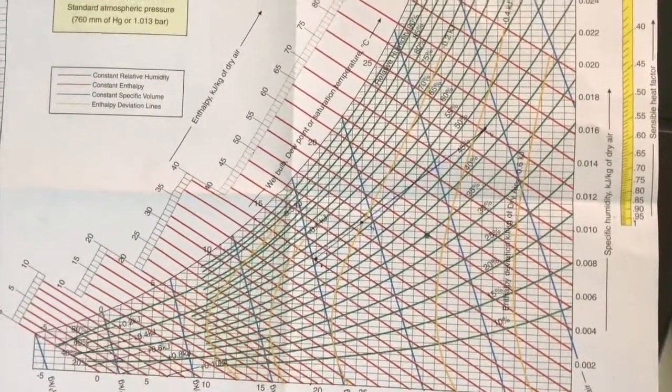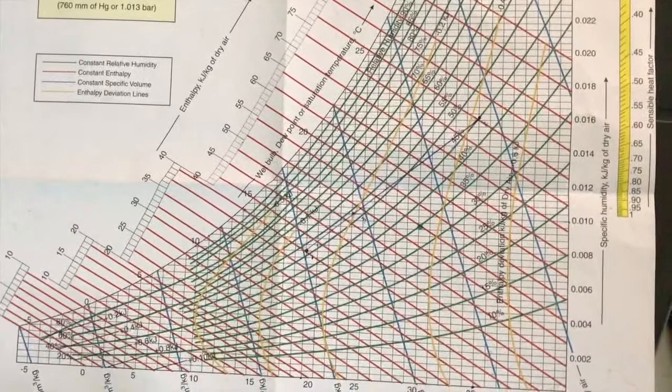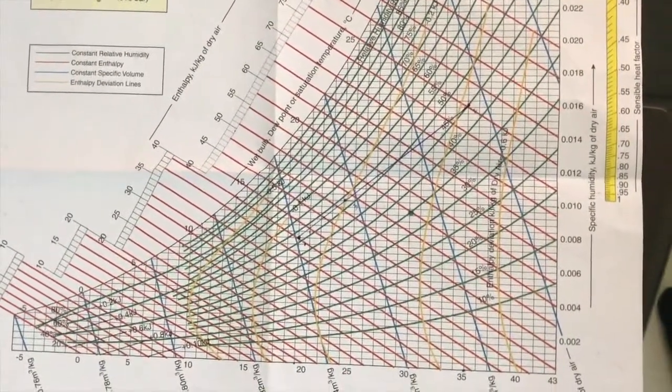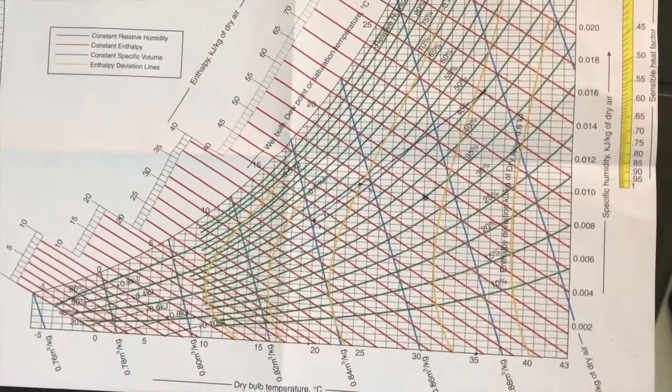By using several conditions we are able to obtain the state of air in the given condition. So that's all about psychrometric chart. Thank you.